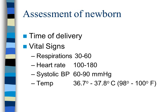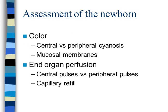Assessment of the newborn starts with noting the time of delivery. Normal vital signs: respirations 30–60, heart rate 100–180, systolic BP 60–90 mmHg — though obtaining a blood pressure on a newborn is difficult without proper equipment. Temperature should be maintained between 98–100°F. The three most important parameters are respirations, heart rate, and temperature.